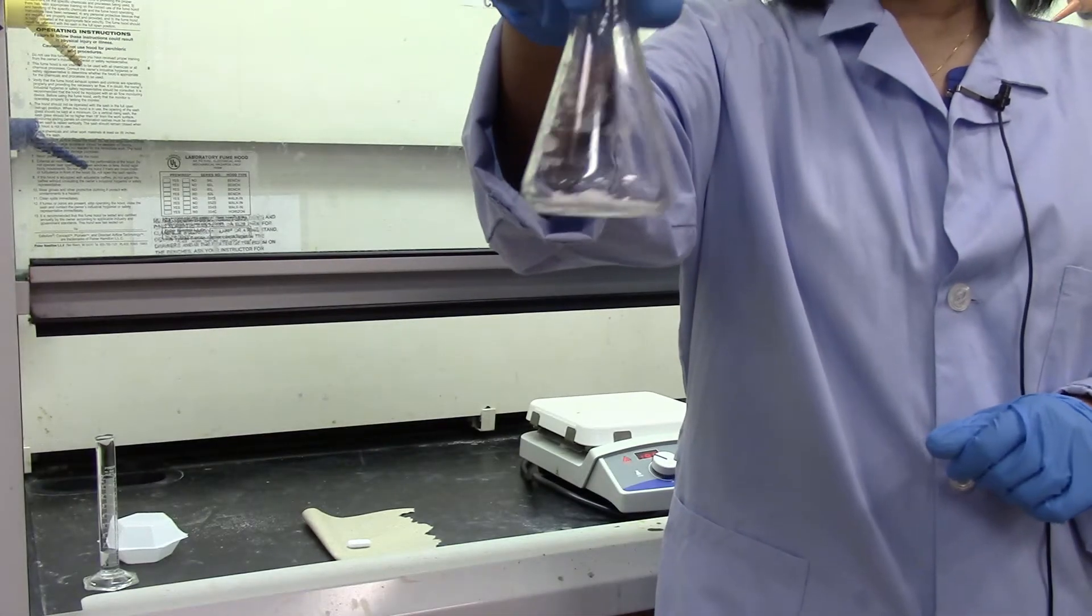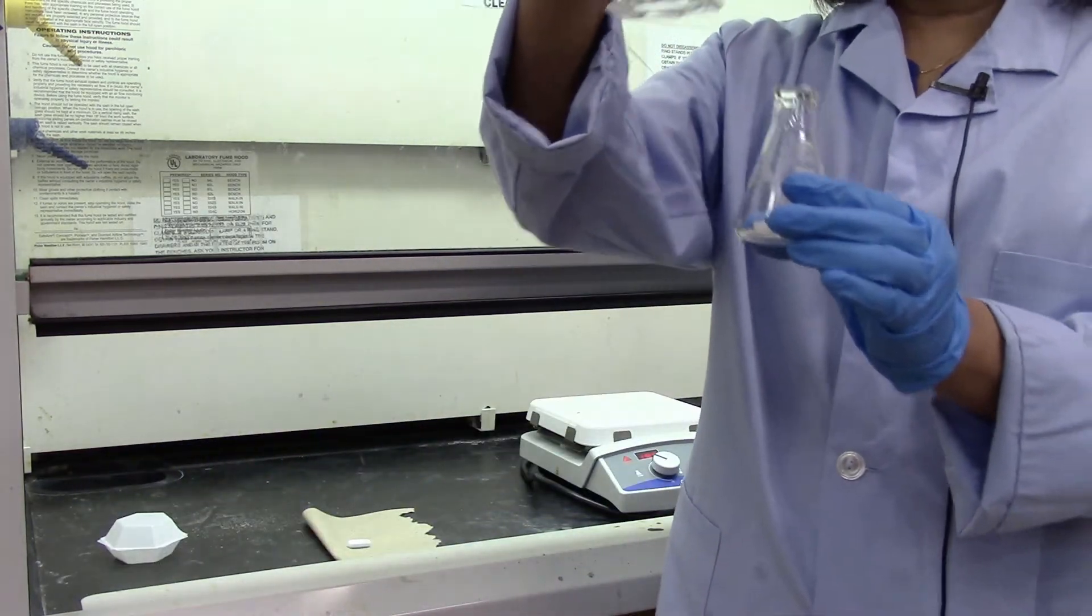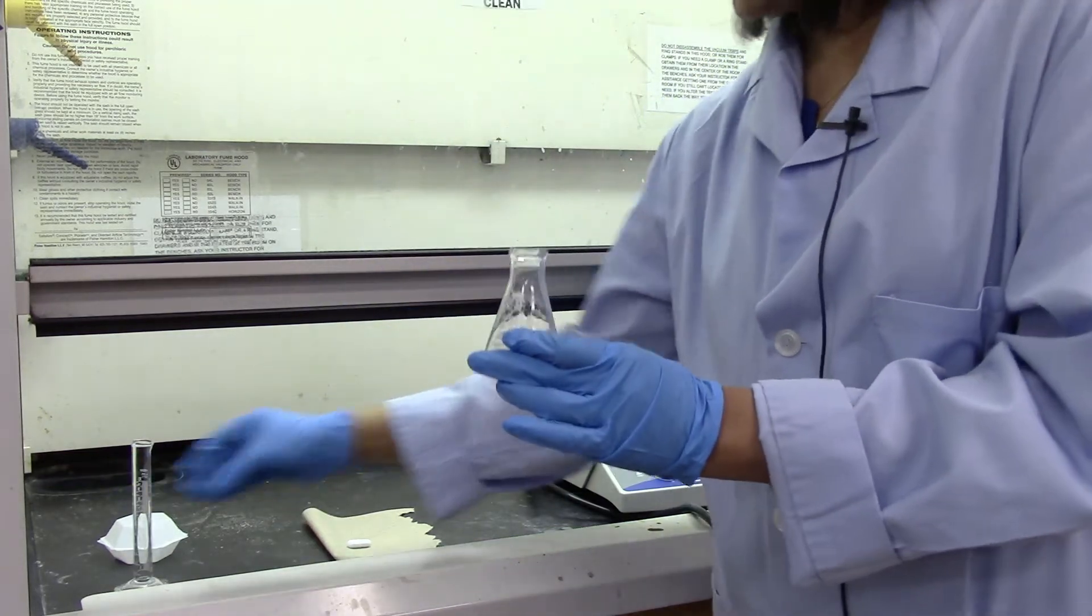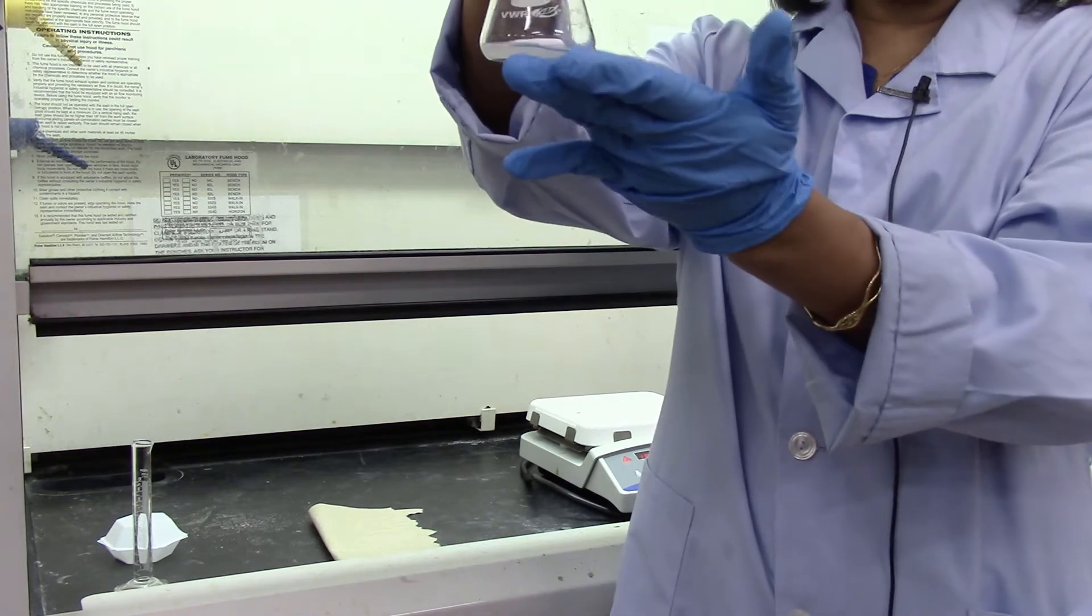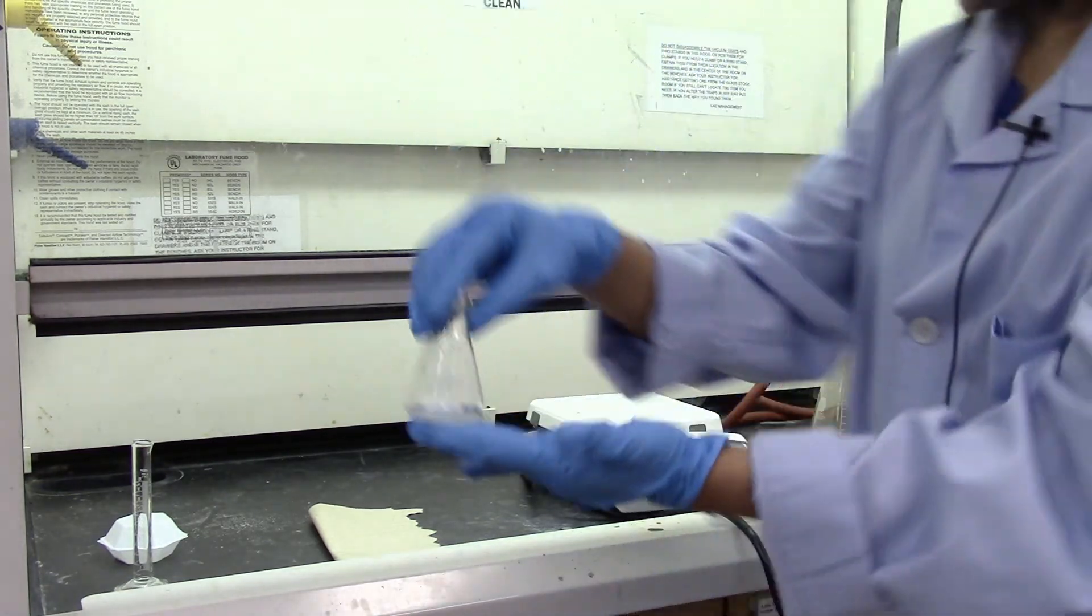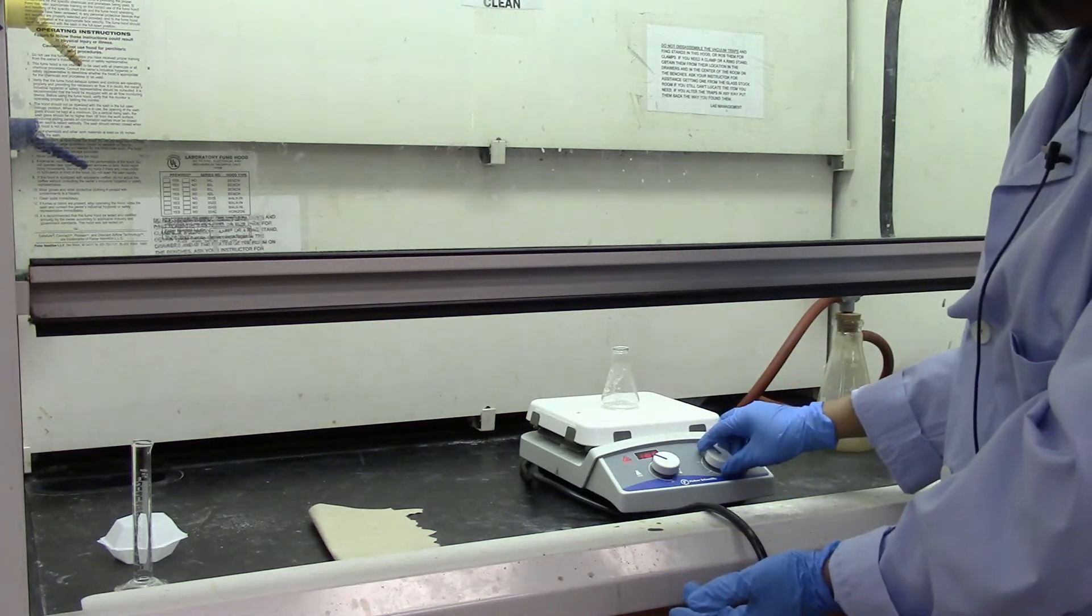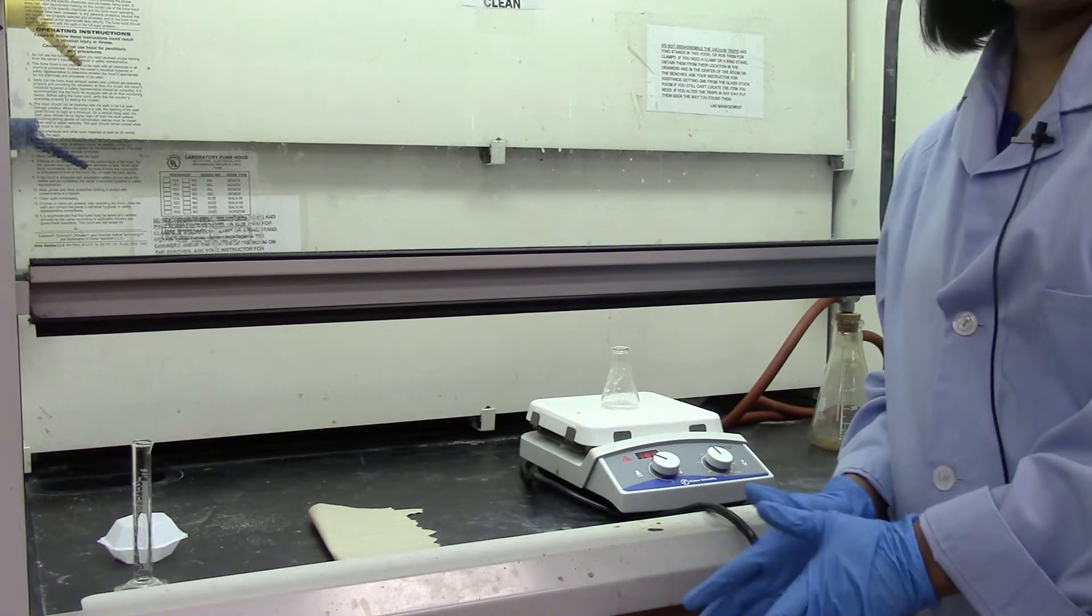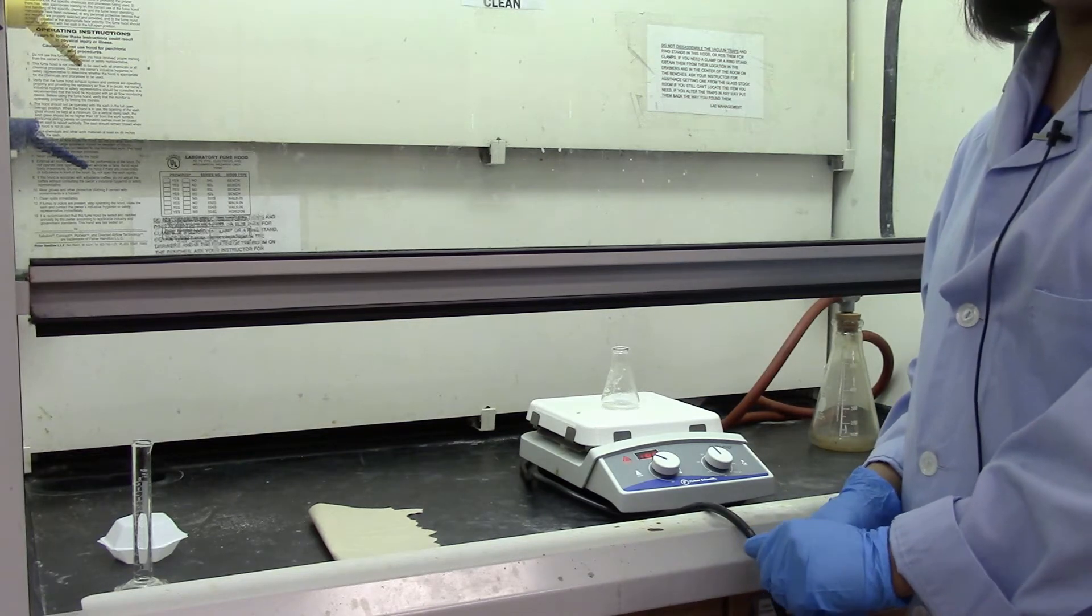I have my 0.3 grams of camphor here and I'm going to add about 2 ml of methanol and I'm going to add a stir bar into this 50 ml Erlenmeyer flask and then I'm going to put it to stir. I will give it some time to dissolve and then we are going to add our sodium borohydride.